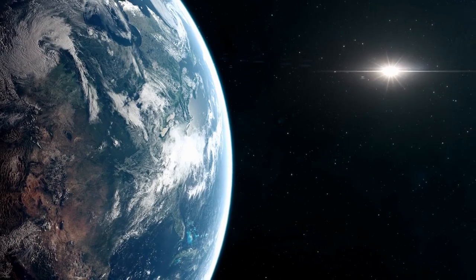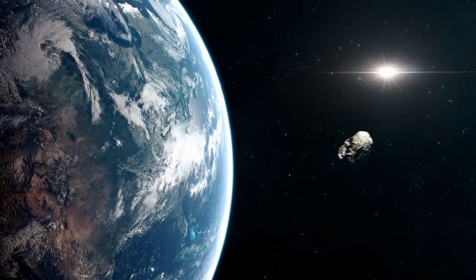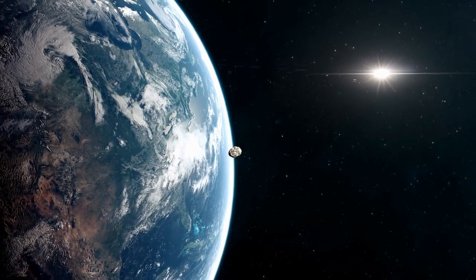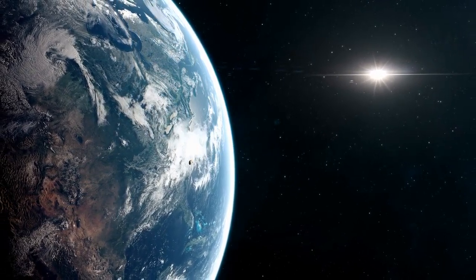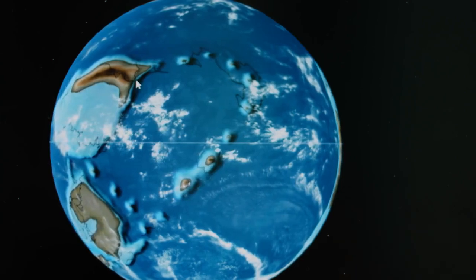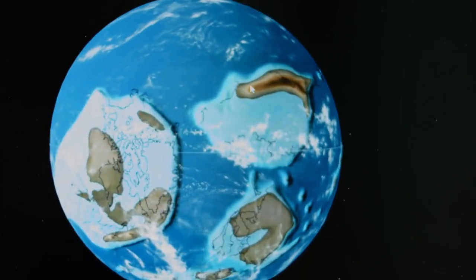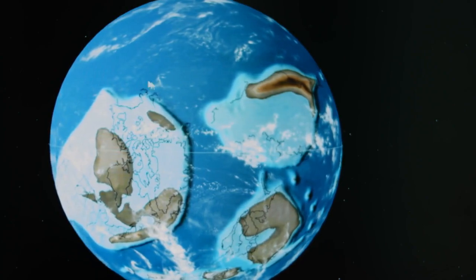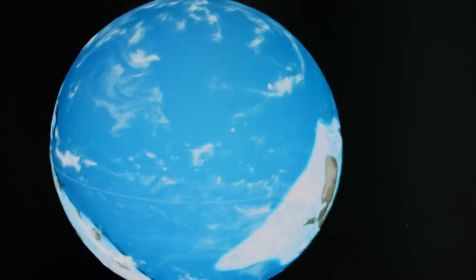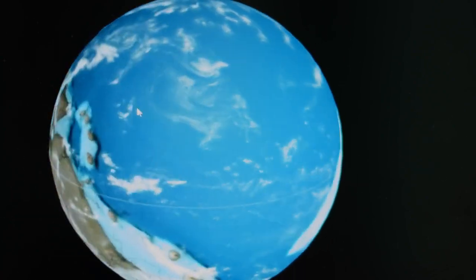Historically, some scientists believe gamma-ray bursts may have caused mass extinctions on Earth in the distant past. For instance, the Ordovician-Silurian extinction event around 450 million years ago wiped out nearly 85% of all species on Earth.